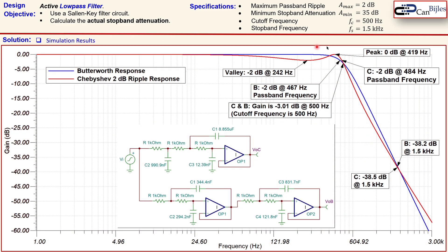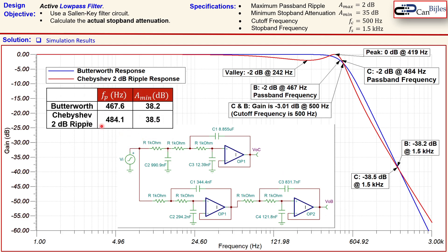Looking at the simulation Bode plot: the red curve is the Chebyshev response showing the ripple clearly, while the blue curve is the Butterworth response with no ripple. Both are connected to the same input, with outputs labeled 'chev' for Chebyshev and 'but' for Butterworth. The passband frequency for the Butterworth was 467.6 Hz and for the Chebyshev 484.1 Hz — both visible on the plot. The Chebyshev ripple shows a valley and then a peak before rolling off at −2 dB.